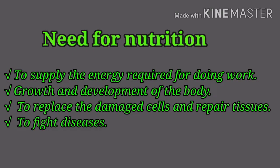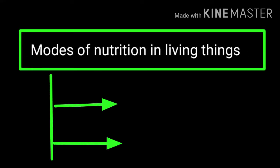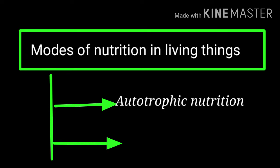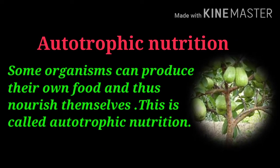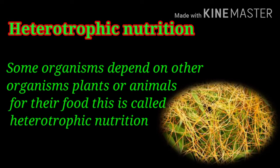Nutrients are needed to supply the energy required for doing work, growth and development of the body, to replace damaged cells and repair tissues, and to fight diseases. There are two modes of nutrition found in living things: autotrophic nutrition and heterotrophic nutrition. Some organisms can produce their own food — this is called autotrophic nutrition. Some organisms depend on other organisms, plants or animals, for their food — this is called heterotrophic nutrition.